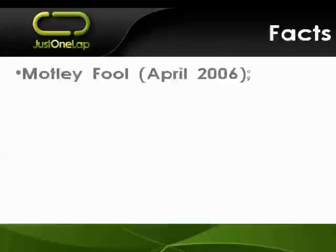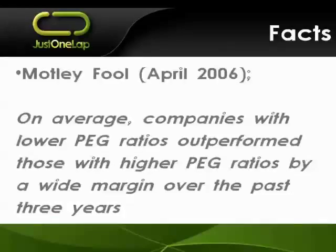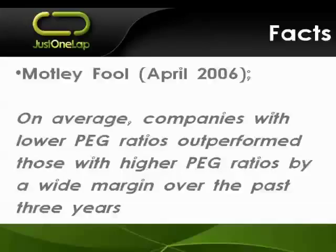Some quick facts — this is from Motley Fool. They did research over a three-year period and crunched the numbers on a couple of thousand companies, and they said that on average, companies with lower PEG ratios outperformed those with higher PEG ratios by a fair margin. They also noted that sometimes a company with a high PEG could do well or a low PEG could do poorly — investing is not about finding one number. But typically, the low PEGs are going to outperform the high PEGs.